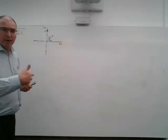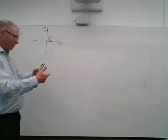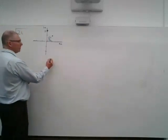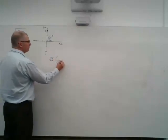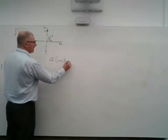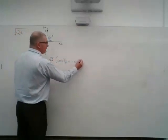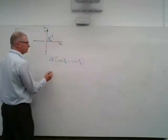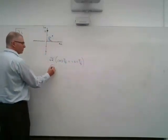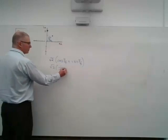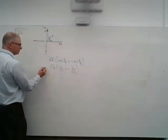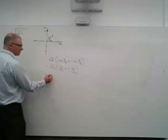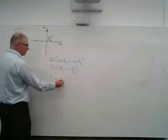So I can then quite quickly write that down in mod arg form. Root 2 cos pi on 4 plus i sine pi on 4, which is root 2 times 1 on root 2 plus i times 1 on root 2, which is just 1 plus i.